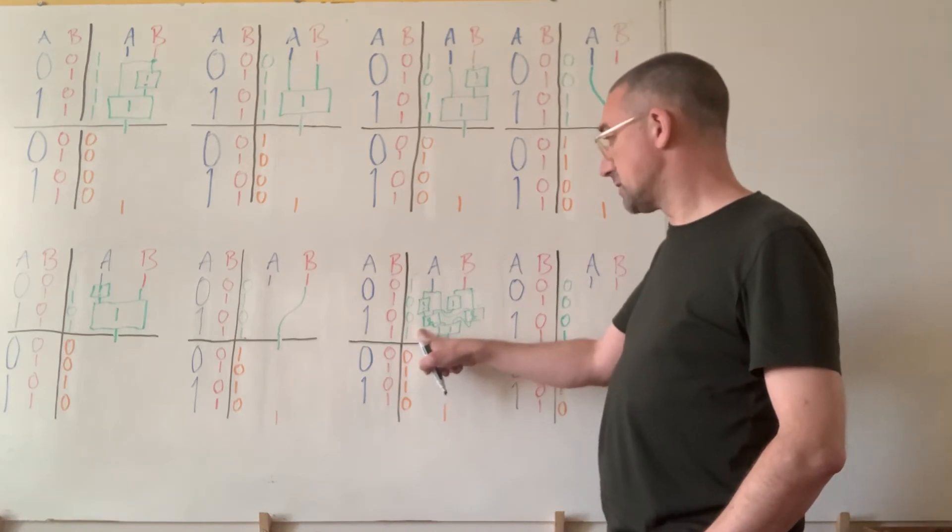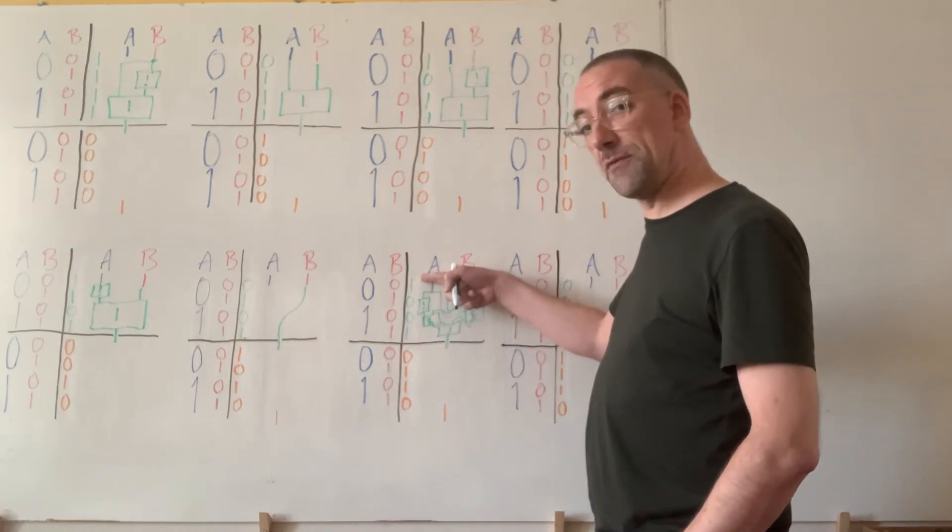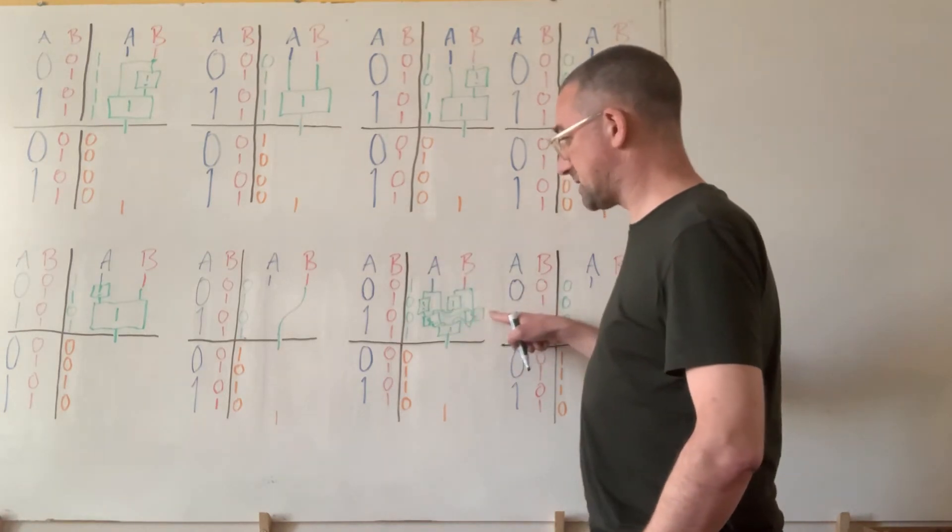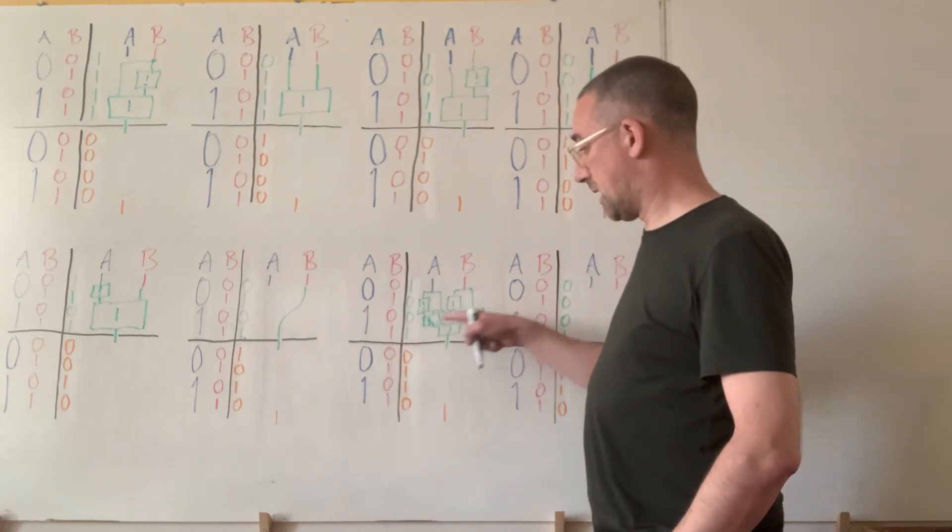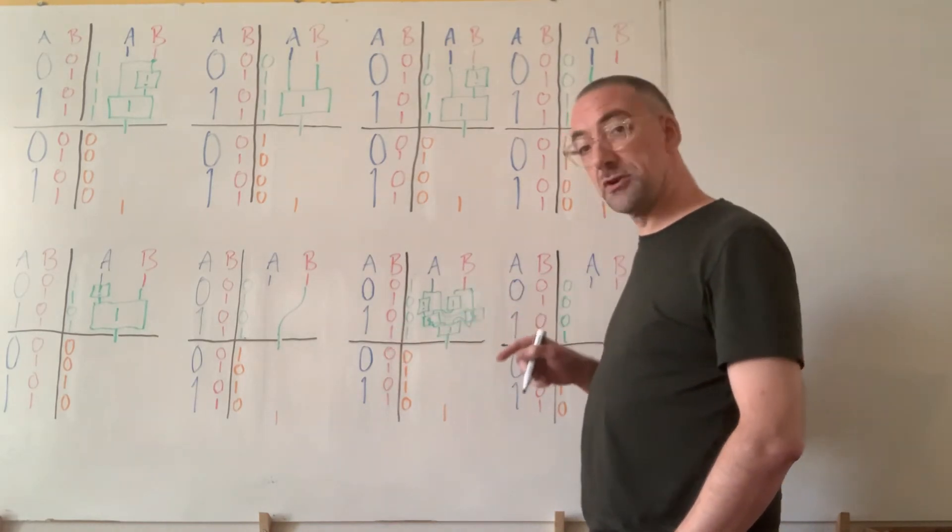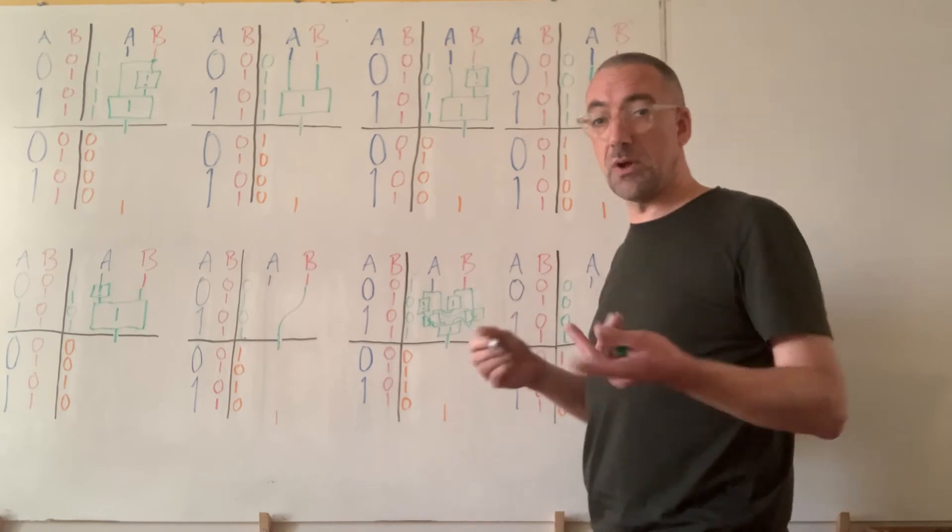So, this AND is coding up the top row of the truth table. It's saying if they're both false the output's true, and this AND is coding up the bottom row of the truth table. If the inputs are both true the output's true. So, this is our equality test.